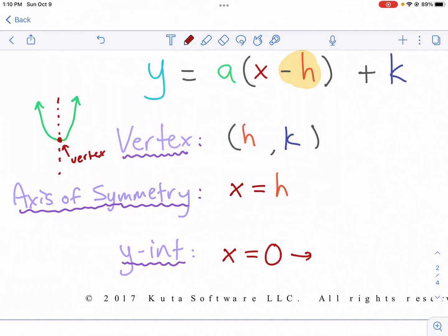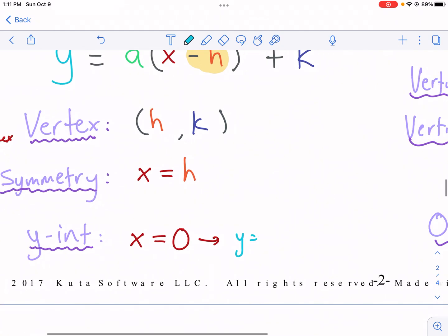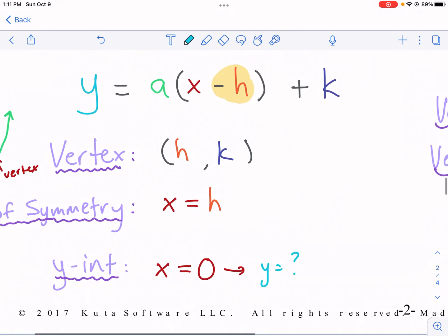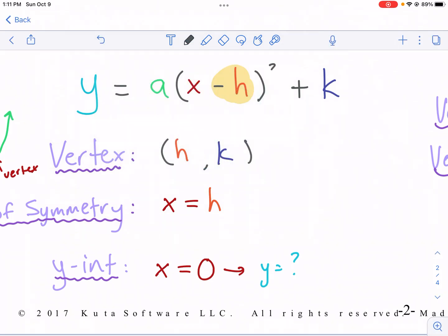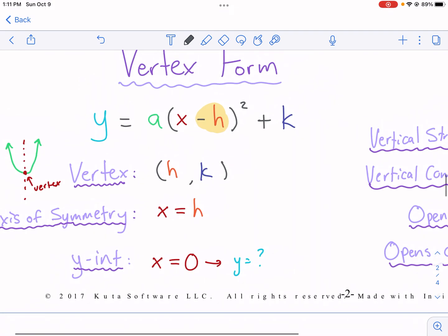Now, your y-intercept is also an important point, and this is the same as it is with even slope-intercept form. This is when x equals zero. You're going to find out what y equals when x equals zero. So this one actually requires the most math is you have to plug in zero for x. Need that squared.